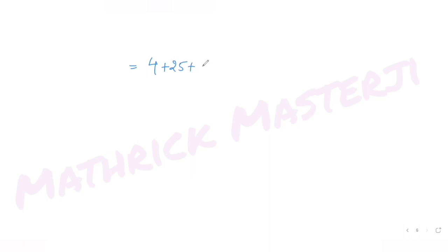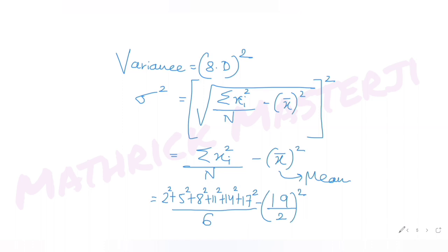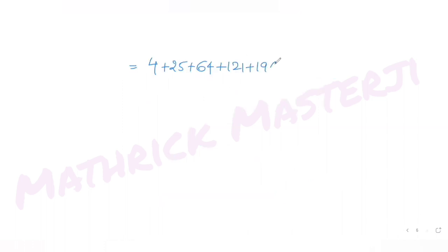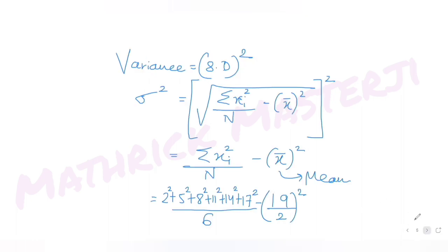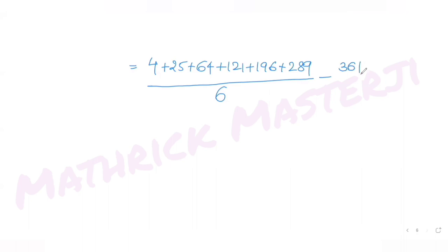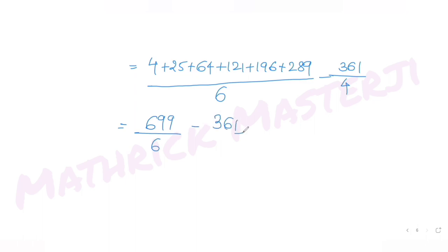Calculating each square: 4 + 25 + 64 + 121 + 196 + 289. Adding these: 4+25 = 29, +64 = 93, +121 = 214, +196 = 410, +289 = 699. So the sum of squares divided by 6 gives 699/6, and (19/2)² = 361/4. So sigma square = 699/6 − 361/4.